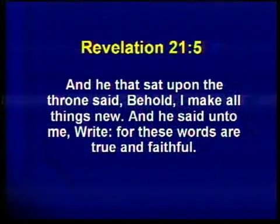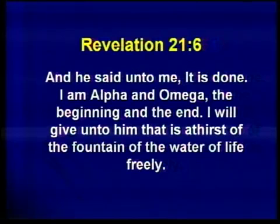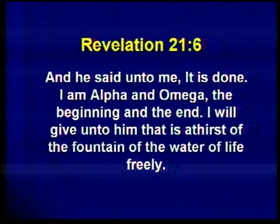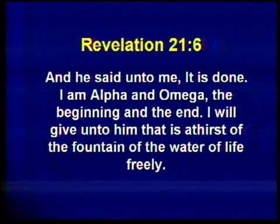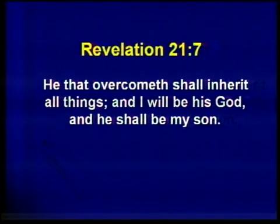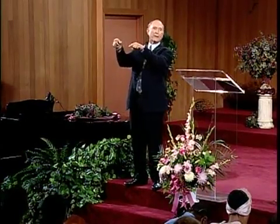Verse 5: 'And he that sat upon the throne said, Behold, I make all things new.' He said: 'Write, for these things are true and faithful.' And he said: 'It is done. I am Alpha and Omega, the beginning and the end. I will give unto him that is athirst of the fountain of the water of life freely. He that overcometh shall inherit all things, and I will be his God and he shall be my son.' At the point when He is speaking these words, the holy city has just descended to earth. Sin and sinners have not been destroyed yet — so these promises are still future.